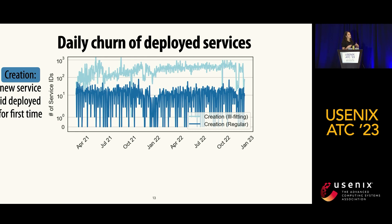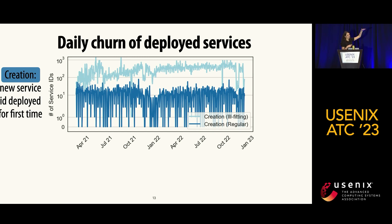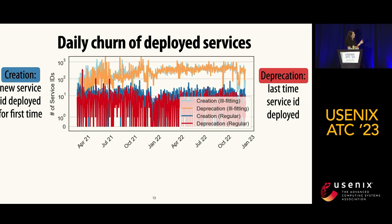The creation rate is split by ill-fitting services and everything else. The inference platform is hovering above 100 new services deployed each day, while regular services hover around 10 new services per day.